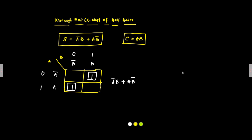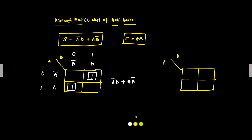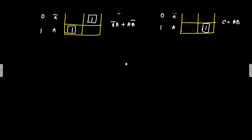Similarly, for the carry output, we draw a two-variable K-map. We place a 1 only in the cell corresponding to A·B. This forms a single-cell group with no further simplification possible. So the carry is confirmed as A·B.